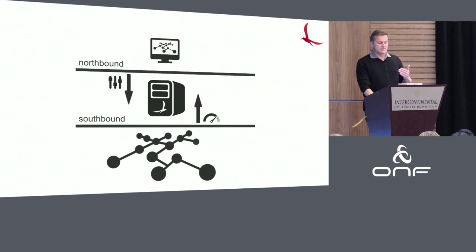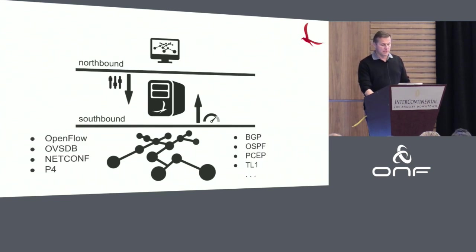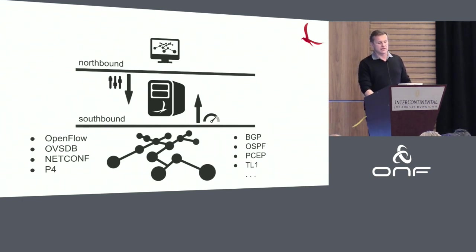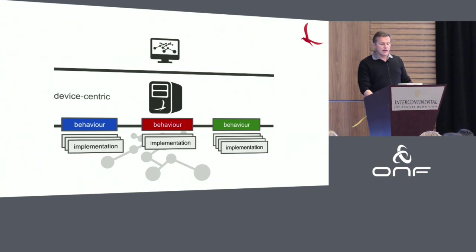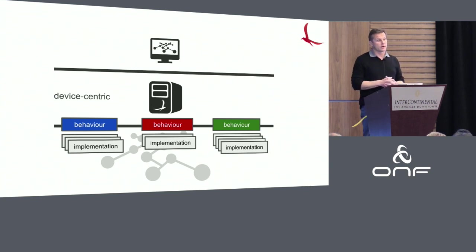An important piece of ONOS is that it offers a southbound which very strongly insulates the core and applications from the details of the underlying environment, and offers a northbound through which you can write applications in a modular fashion. The southbound itself makes it possible to build solutions from different protocols — it can be something esoteric like TL1 or something as futuristic as P4. The abstractions to the south tend to be device-centric, focusing on individual network elements, ports, links, and things like that.